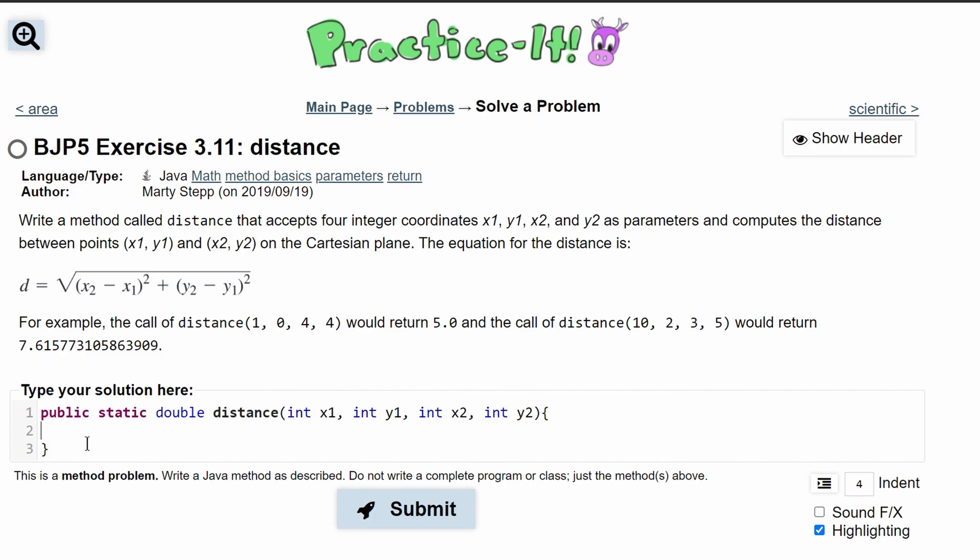So in our method we need a return statement and we are going to return whatever this equation will give us with our parameters. The first thing that we have to do is write a Math.sqrt, and everything that's going to be inside of the square root is going to be square rooted.